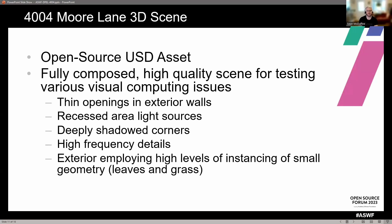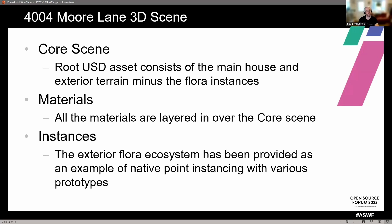In addition to the geometry itself being designed to exacerbate typical issues, the USD structure was created for several layers of testing. The root USD asset consists of the main house structure and the exterior terrain minus the flora instances. All of the materials are layered in over the core scene for easy access to core render issues and to enable material R&D. The exterior floral ecosystem has been provided as an example of native point instancing with various prototypes.